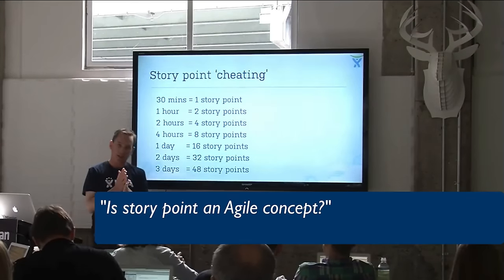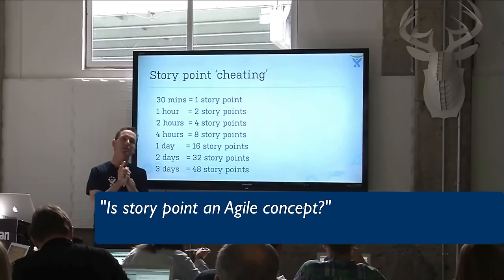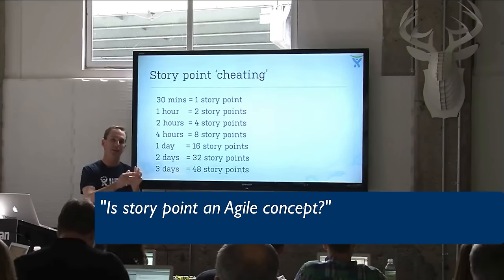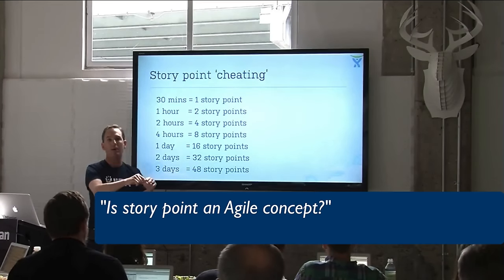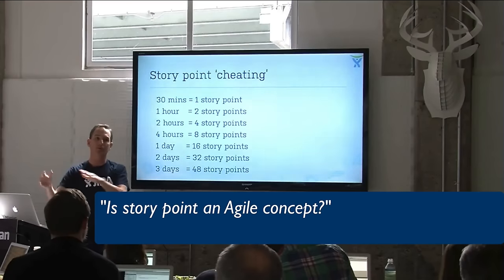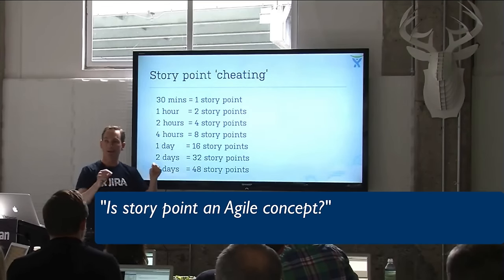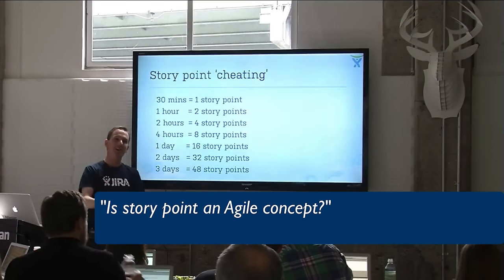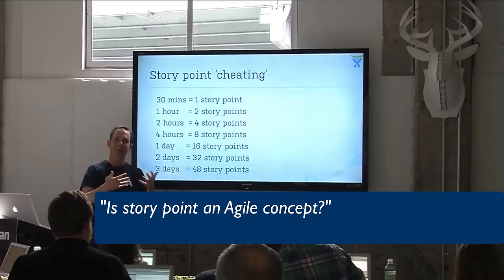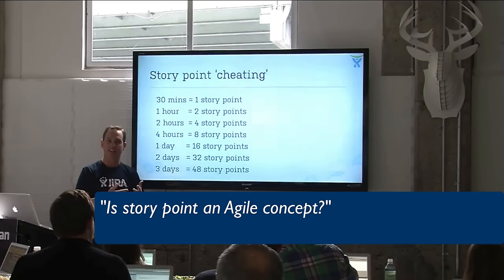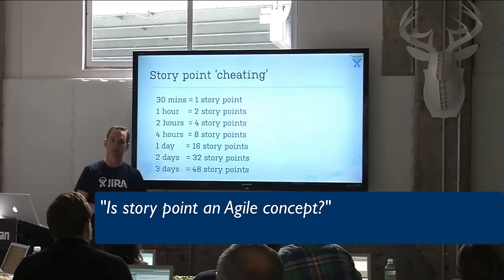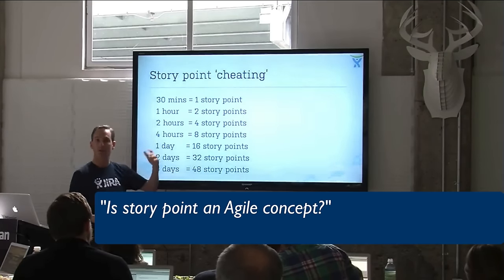Story point is an Agile concept. What they tried to get away from is hour estimates, because as soon as you say a task is going to take two hours, then you do time tracking and it takes two and a half hours, somebody looks at that and says you're working too slow. So they tried to make an obscure number that was harder to translate, so that when people were first estimating, it didn't turn into something that bosses used to judge performance. That's why it's deliberately obscured from hours.